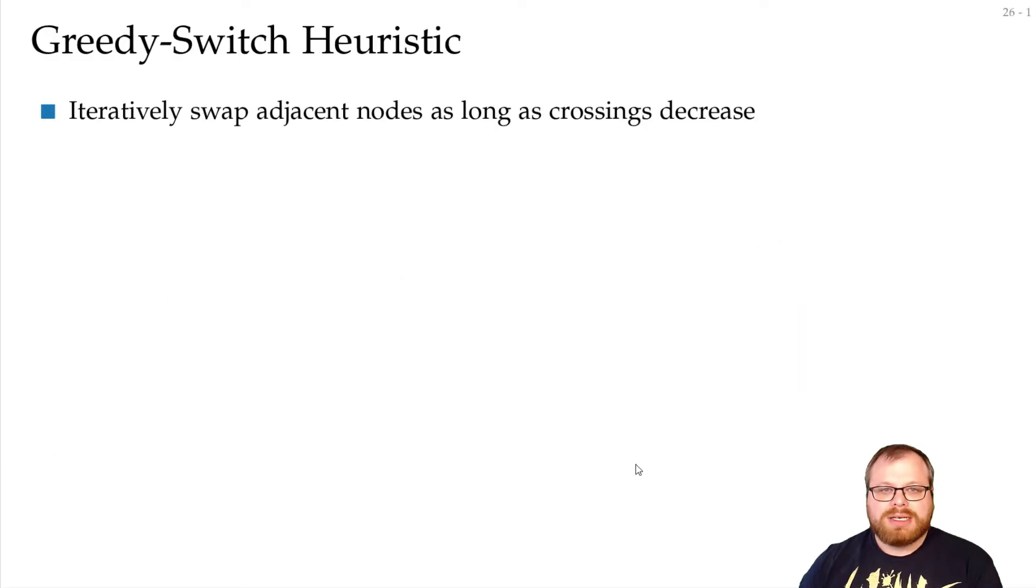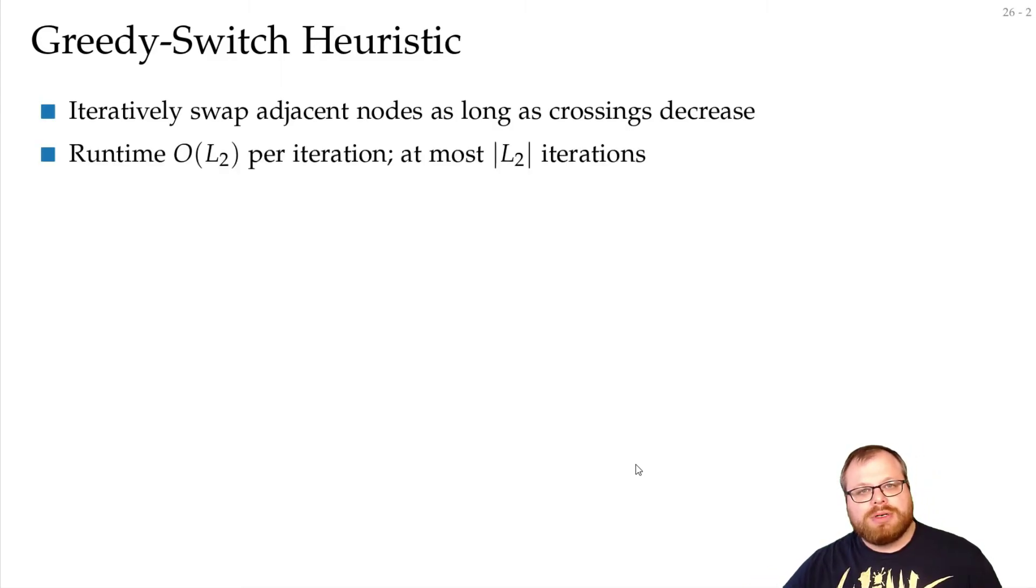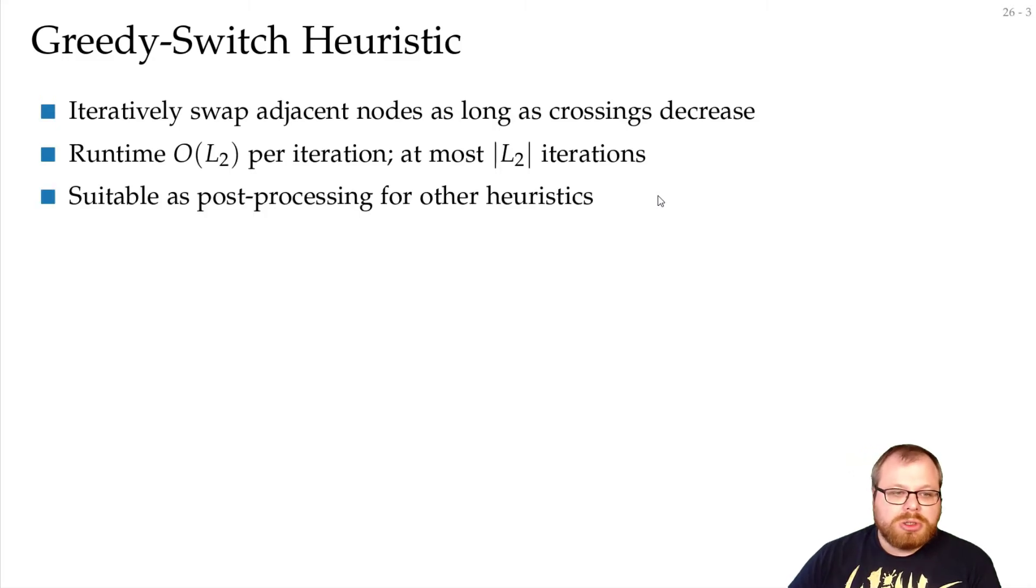Let's look at the greedy switch heuristic. This is very simple to describe. We just iteratively swap adjacent nodes as long as the number of crossings decreases. That's it, that's the whole algorithm. You just go through it, and whenever you can switch something to reduce the number of crossings, you do that. This takes O(L2) time per iteration. This is usually used as post-processing for other heuristics because it's pretty fast and you can improve things. By definition, it doesn't make it worse.